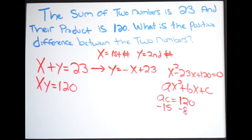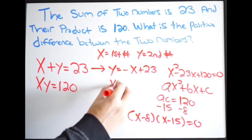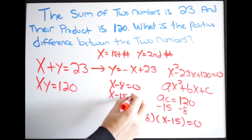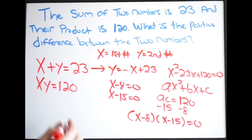And since my a value here is 1, I can go ahead and put this right into its factored form. So putting it right into its factored form, we get x minus 8, x minus 15. This will be all equal to zero. And now we just solve each one of our factors, which we know is going to be x minus 8 equal to zero, x minus 15 equal to zero. Solving both of those, we get x is equal to 8, x is equal to 15.